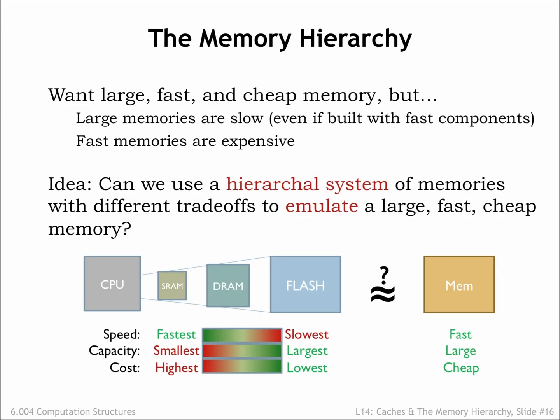Can we figure out how to get the best of both worlds? We want our system to behave as if it had a large, fast, and cheap main memory. Clearly we can't achieve this goal using any single memory technology. Can we use a hierarchical system of memories, with different trade-offs, to achieve close to the same results? Could we arrange for memory locations we're using often to be stored in SRAM and have those accesses be low latency? Could the rest of the data be stored in the larger and slower memory components, moving between the levels when necessary?